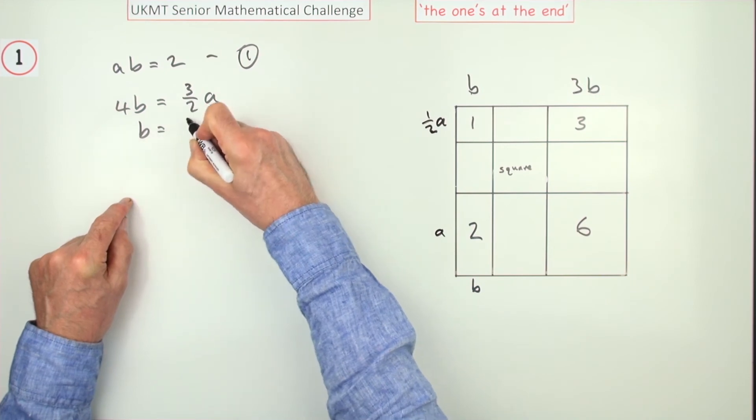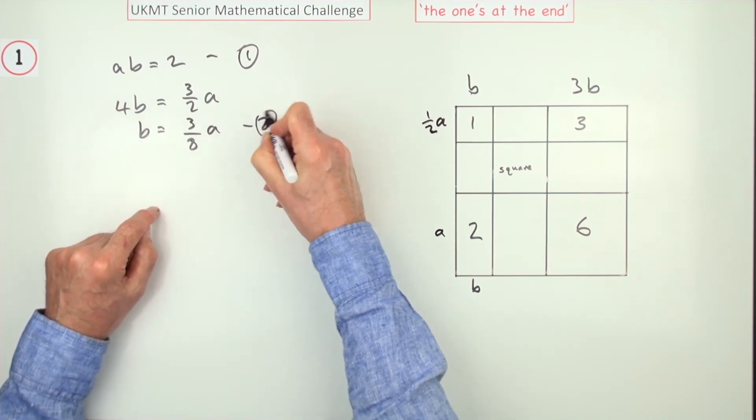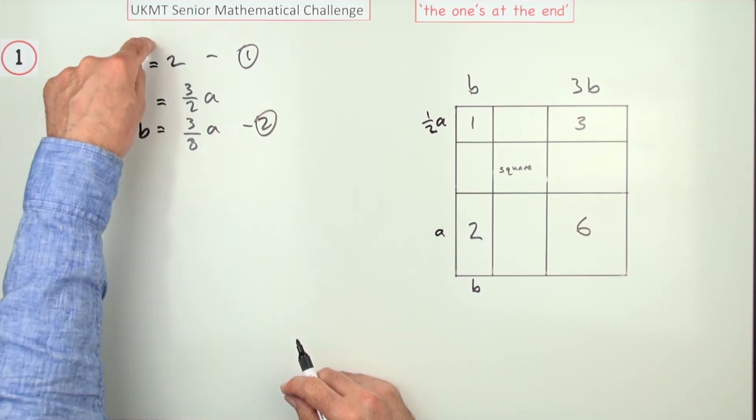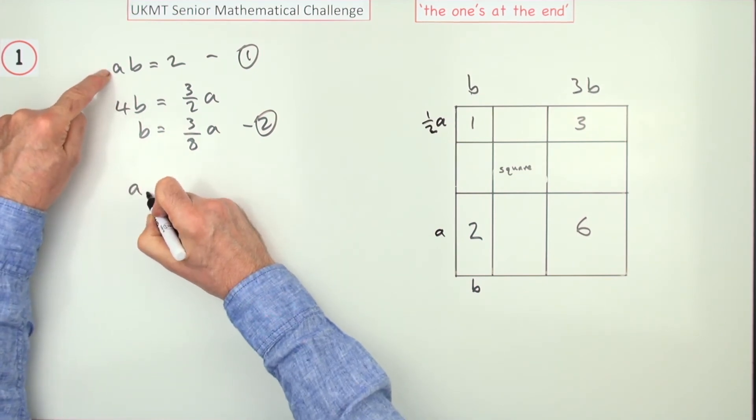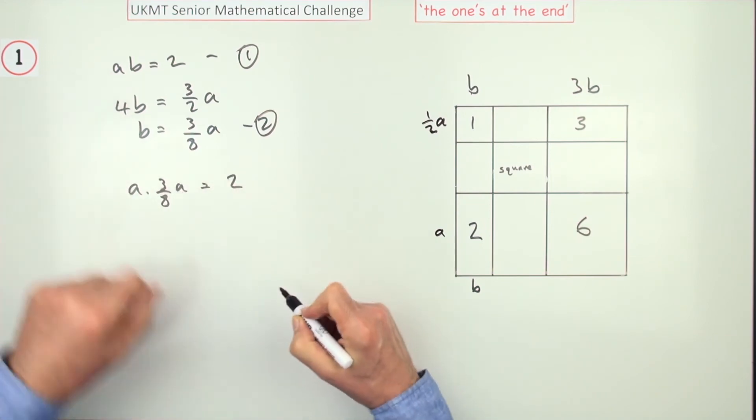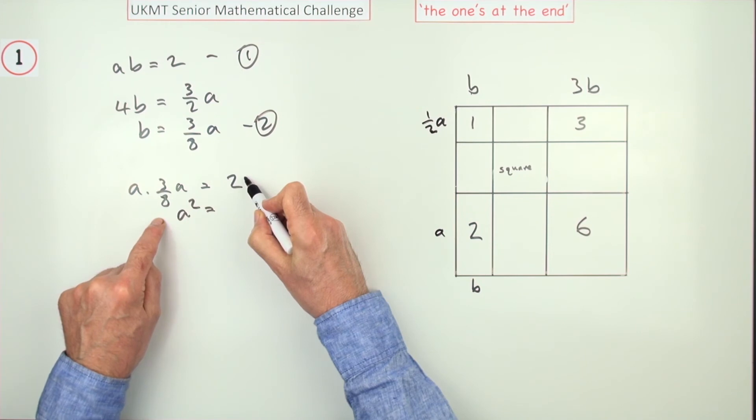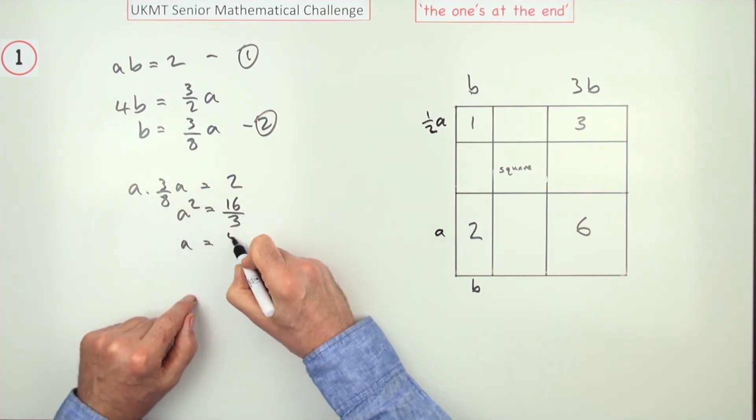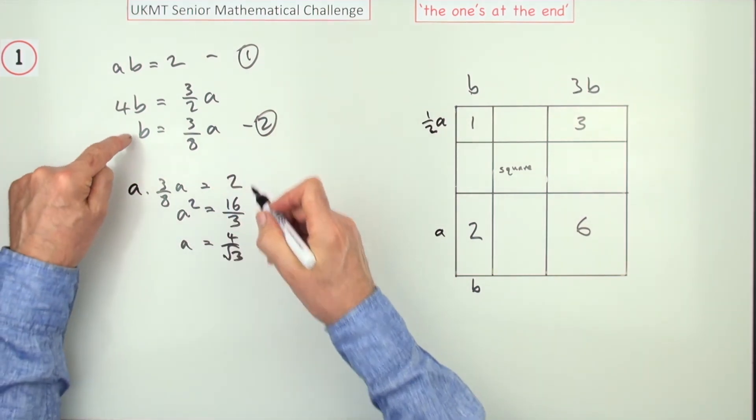So b is equal to, take the four cross, divide 3 eighths of a. There's another equation. You're almost there now, just need to feed it back into this. A pair of equations and two variables should be able to find them. So feeding it into the first one: a times, and that's three eighths of a, should equal 2. So a squared would equal 16, taking it across, 16 upon 3. So a is going to be the square root of that, that's 4 upon root 3.